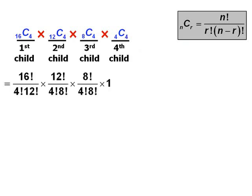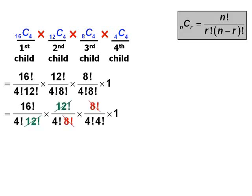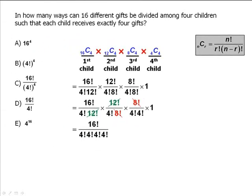At this point, we can do some simplifying. We can cross out our 12 factorials and our 8 factorials to get the following. And since the denominator features 4 factorial times itself four times, we can rewrite that as 4 factorial to the power of 4. And we can see that this answer is exactly the same as answer choice C.